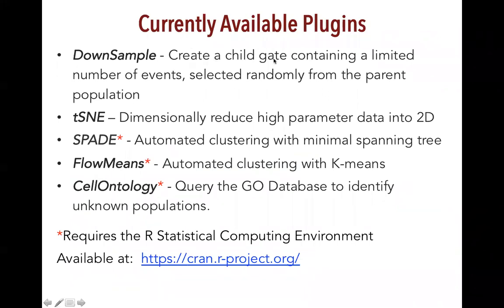Downsample creates a gate containing a limited number of events evenly selected across the entire time slice of the sample — basically a random selection from the parent population. You get a downsample population with fewer events, but it still reflects the same phenotypes and functional properties as the entire file. T-SNE is a dimensionality reduction algorithm that creates two new dimensionally reduced parameters.